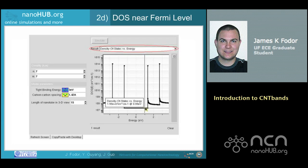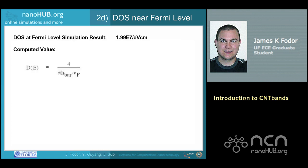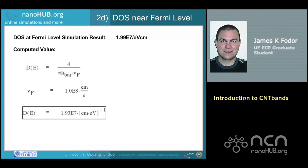For part D, select density of states versus energy from the results pull-down menu. The density of states at the Fermi level, E equals 0, is 1.99E7 per electron-volt centimeter. Now that we have a simulation result, we will compute the value from the formula D(V) = 4pi over h-bar times V_F. Since the carrier velocity is 1.0E8 centimeters per second, the computed density of states is found to be 1.93E7 per electron-volt centimeter, which is very close to the simulated value.